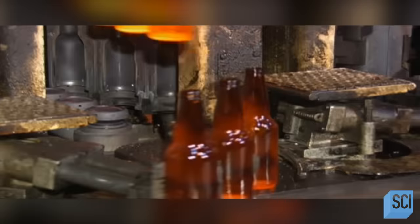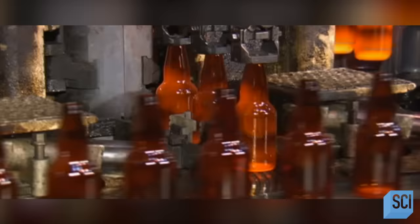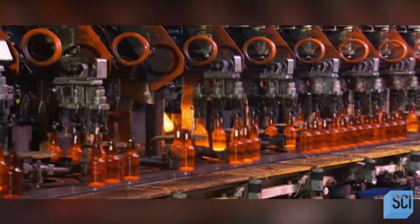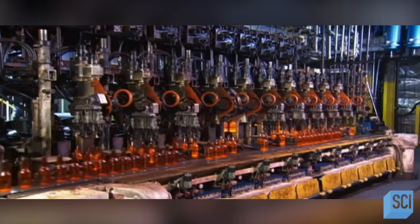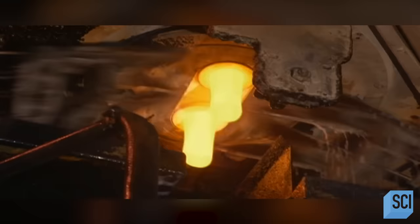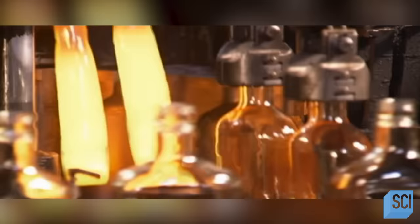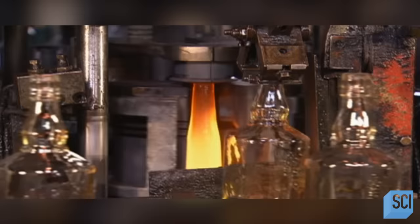This process creates the final bottle shape and hollows out the inside. These are amber colored beer bottles. The color is produced by adding small amounts of iron, sulfur, and carbon to the glass mix. The factory uses a similar manufacturing process to produce other types of bottles and jars. In this run, the company is making 375 milliliter wine bottles out of clear glass.